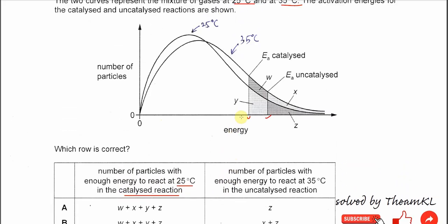So catalyzed reaction, we need to focus from this part onwards. It's mentioned 25 degrees C, so we need to focus on this curve. So it's going to be Y plus Z. These are the number of particles with enough energy to react at 25 degrees C in the catalyzed reaction.